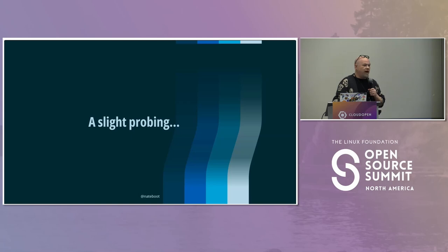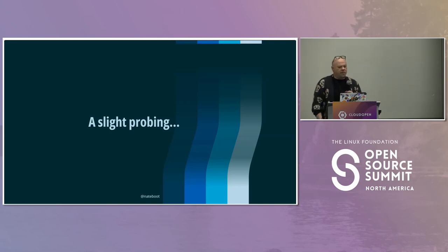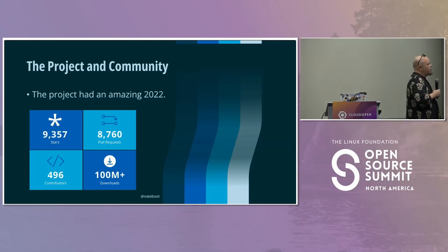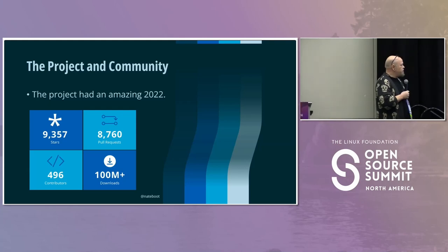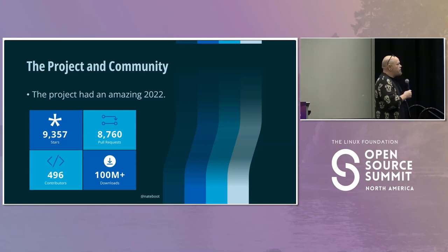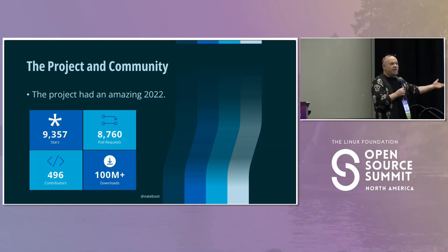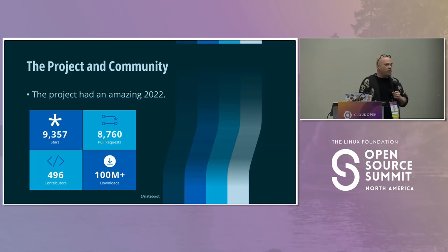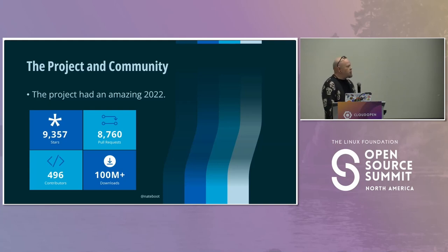I'm going to take a few minutes to brag a bit about the OpenSearch project. We had a year in review at the end of 2022 where we counted our GitHub stars, contributors, and downloads. We had 9,000 stars on GitHub, and that 100 million downloads mark is actually up to something like 200 million by now. About 500 contributors from all over the place. The momentum is important to me, and our project will never thrive without a thriving community. We always welcome GitHub stars and contributions from everyone.